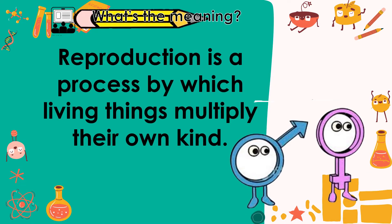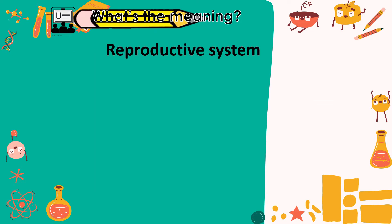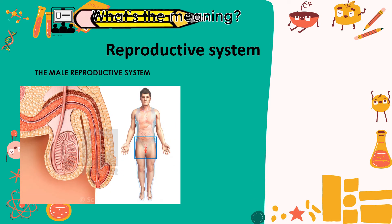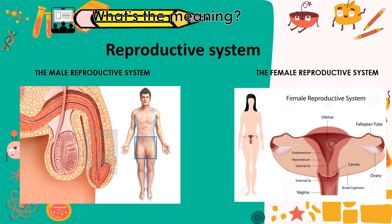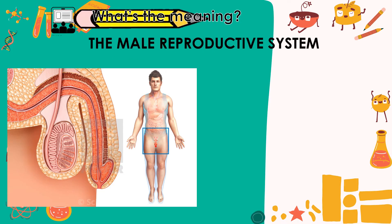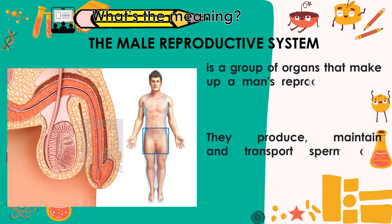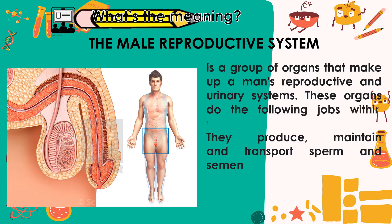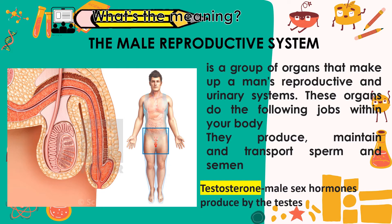Reproduction is a process by which living things multiply their own kind. We have two kinds of reproductive system: the first one is the male reproductive system, and the second one is the female reproductive system. The male reproductive system is a group of organs that makes up a man's reproductive and urinary system. These organs produce, maintain, and transport sperm and semen. Testosterone is a male sex hormone produced by the testes.